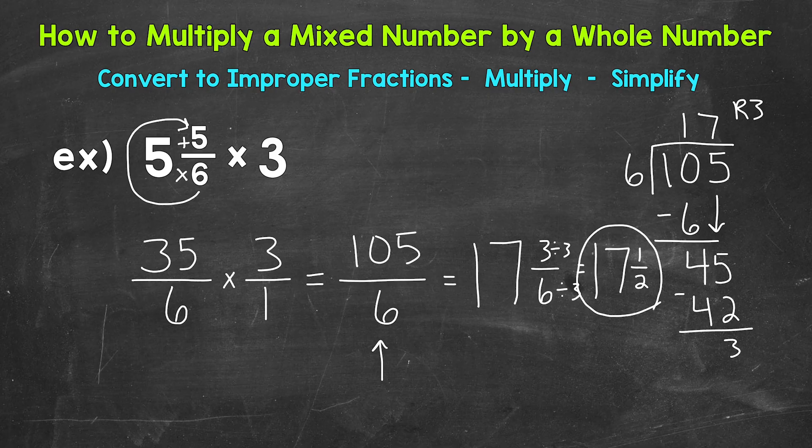So there you have it. That's how to multiply a mixed number by a whole number. Convert everything to improper fractions. That way we can multiply straight across. Numerator times numerator and denominator times denominator. And we can simplify from there if necessary.